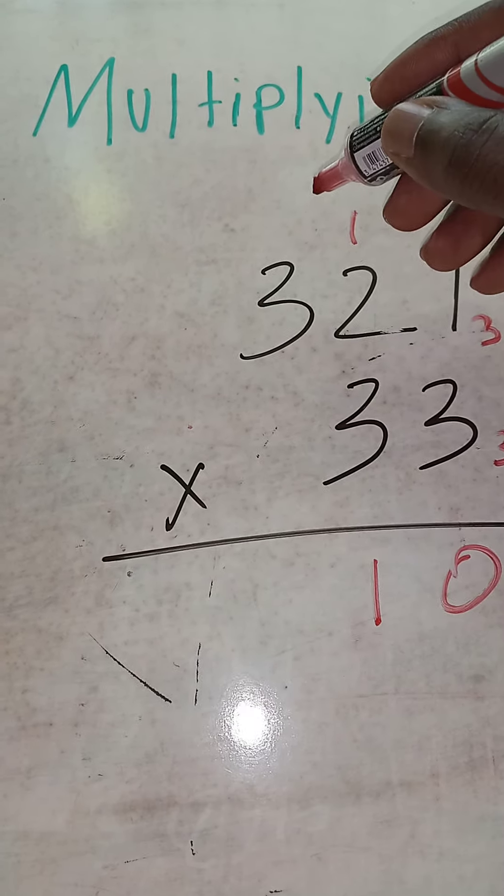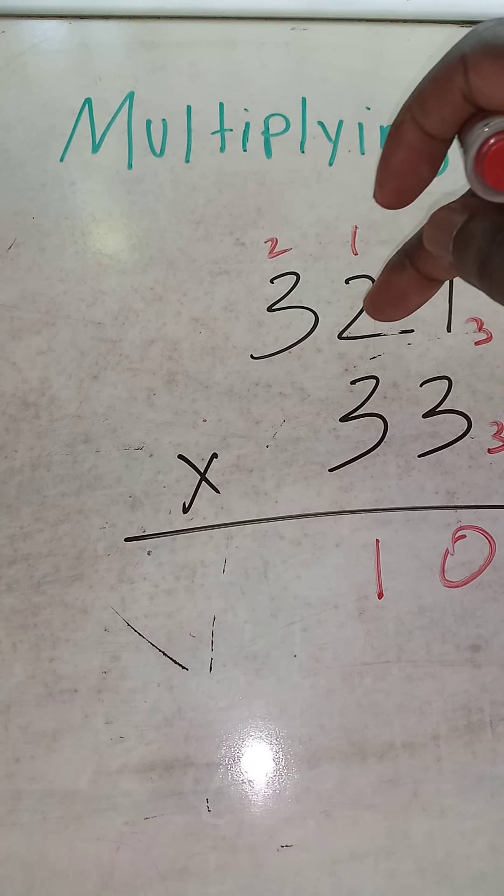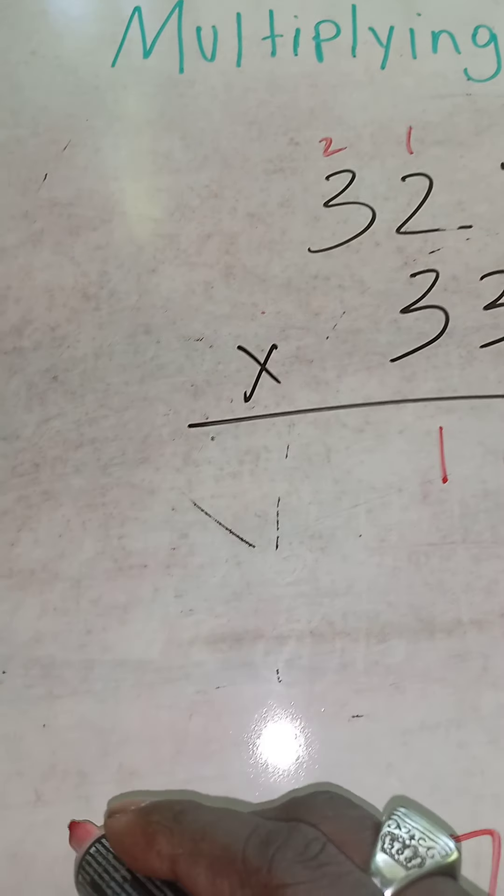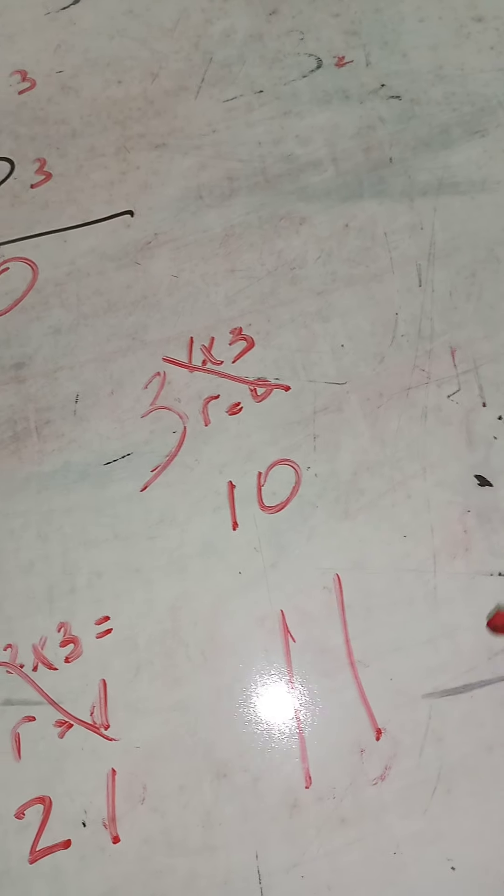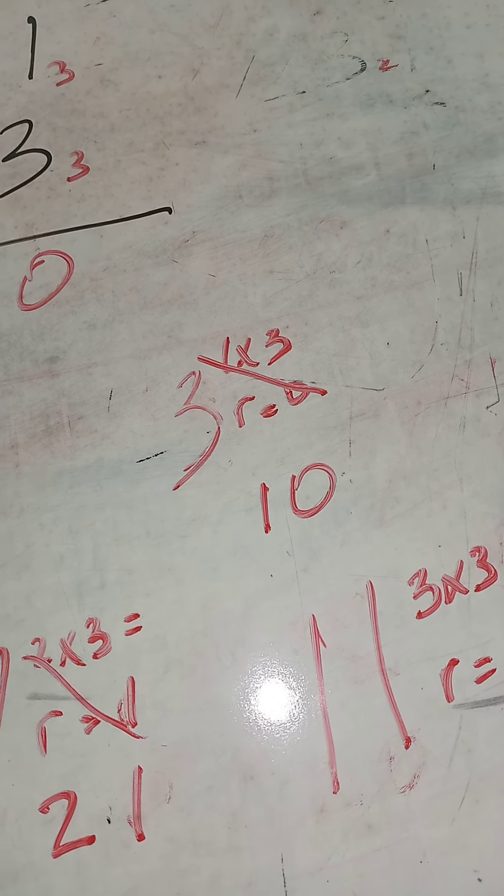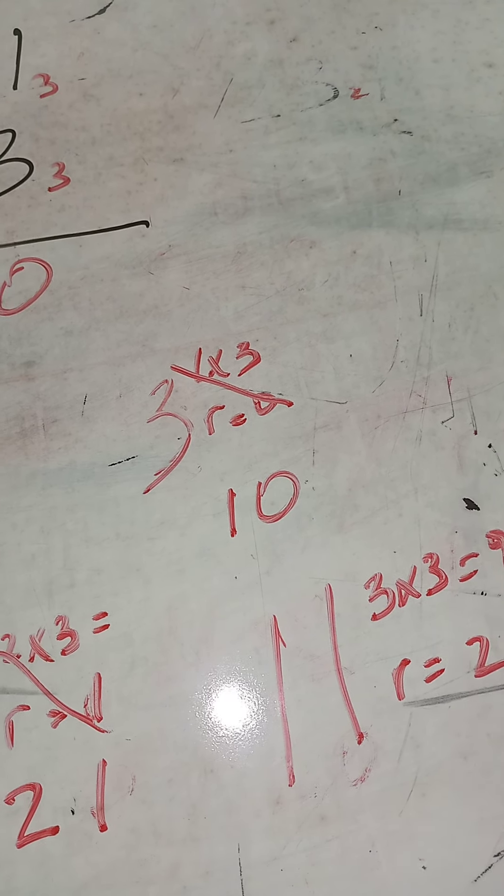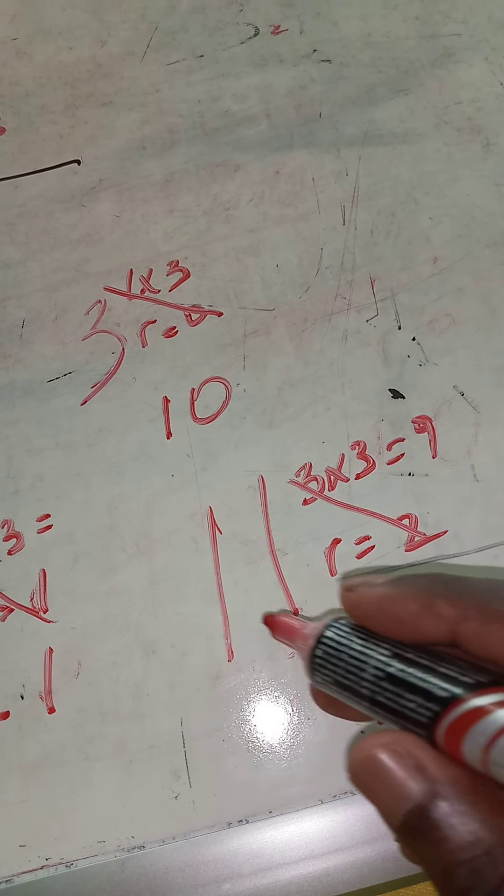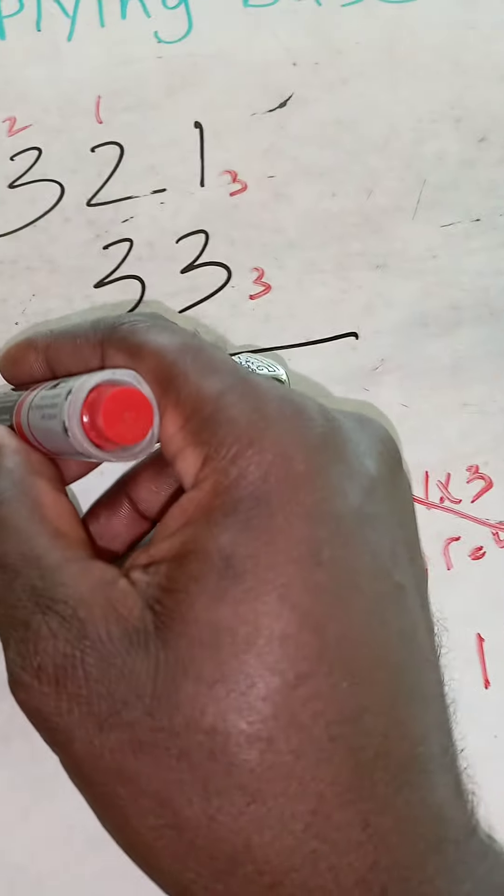3 times 3 equals 9, 10, 11. Can't write 11. 3 can go into 11 three times. 3 times 3 equals 9 remainder 2, so with 3-2 that's how you write 11 in base 3. We'll put it right here.